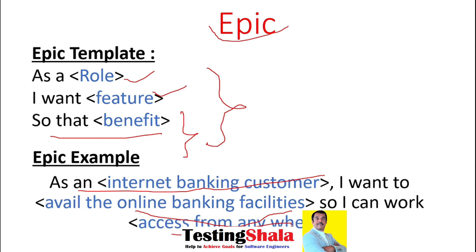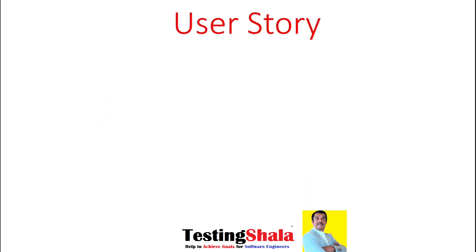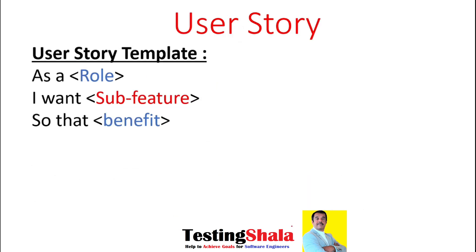Now we will try to understand the template for a user story along with an example. The user story template looks similar to the epic, but here it is written at the sub-feature level.